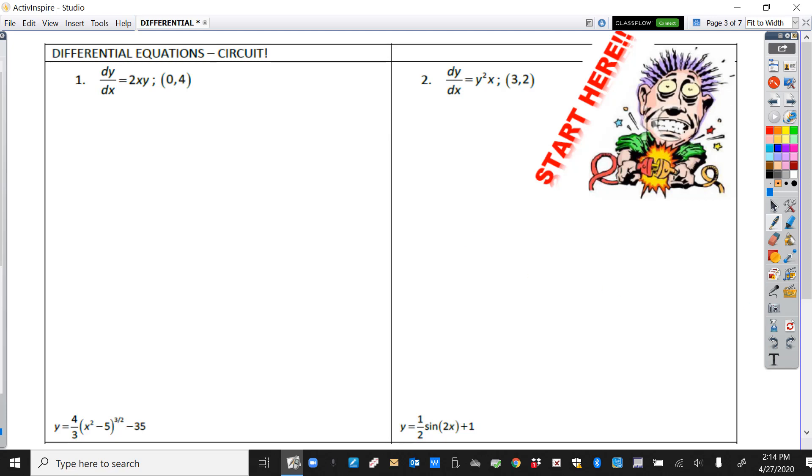So let's do that one. I'll take this thing and first separate the variables, so this is going to be dy over y² is equal to x dx, and then we're going to integrate both sides.